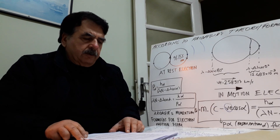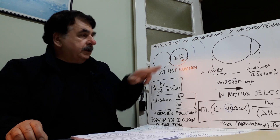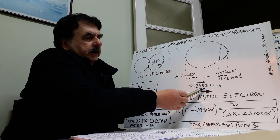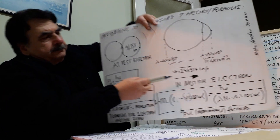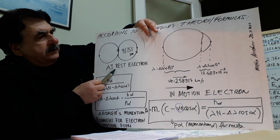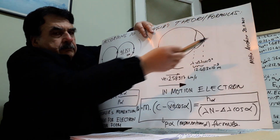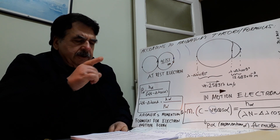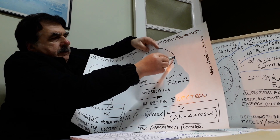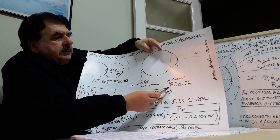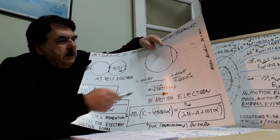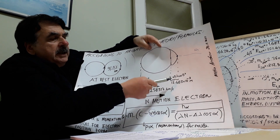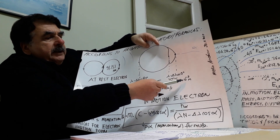For instance, according to my formulas, if an electron motion form with 91.155 nm initial wavelength is relocating at 258,917 km per second — at this velocity it is relocating. In the motion direction, at the zero-degree direction, the wavelength shrinks to lambda-normal minus delta-lambda times cosine(0°), which I have computed according to my theory and formulas to be 12.483 × 10⁻⁹ meters.